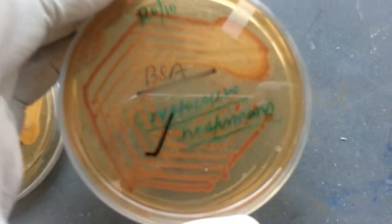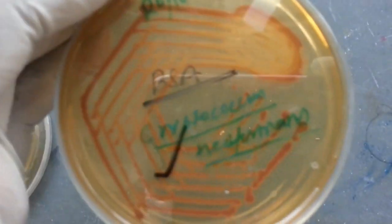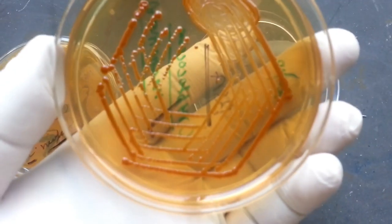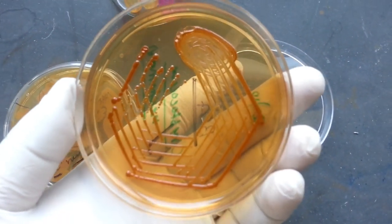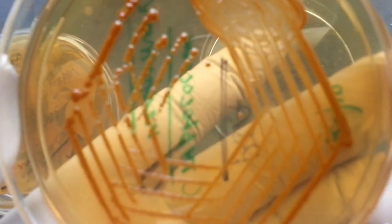Lactophenol cotton blue mount shows budding yeast cells, which is present here. Niger seed or bird seed agar is a differential medium for presumptive identification of Cryptococcus neoformans. It produces brown colonies on this medium.